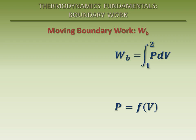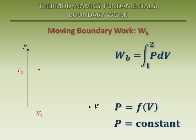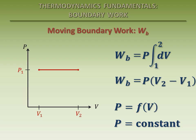In order to integrate the right side of the equation, we need to have a functional relationship between the pressure and the volume — we need to know how the pressure changes as the volume changes. This functional relationship can be seen by plotting the pressure as a function of the volume. Let's look at some examples of different process paths on the PV diagram. Suppose that the initial pressure is P1 and the initial volume is V1. The simplest case occurs when the pressure stays constant as the volume changes. The process path is simply a straight line from the initial volume to the final volume. Because the pressure is constant, it can come out of the integral. Evaluating the integral tells us that the boundary work done during this process is simply equal to the pressure times the change in the volume. Note that the boundary work is equal to the area under the process path on the PV diagram.